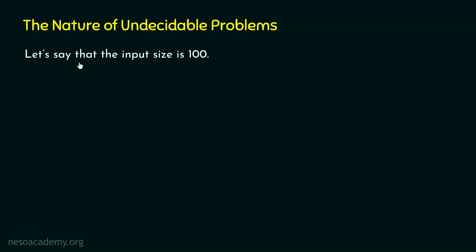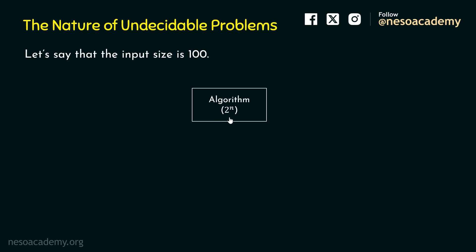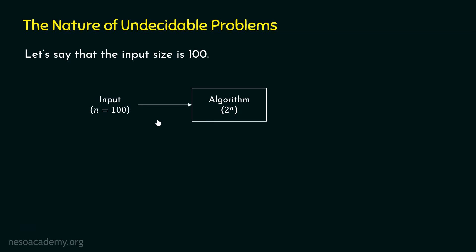Let's assume that the size of the input is 100 and we want to feed this input to an algorithm which takes 2 to the power of n time, where n represents the size of the input. So the input is of size 100 and this algorithm takes 2 to the power of n time. We want to know how much time it takes to terminate — the exact time, not just 2 to the power of n.